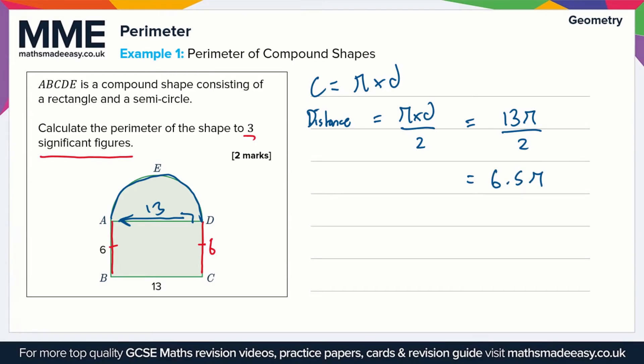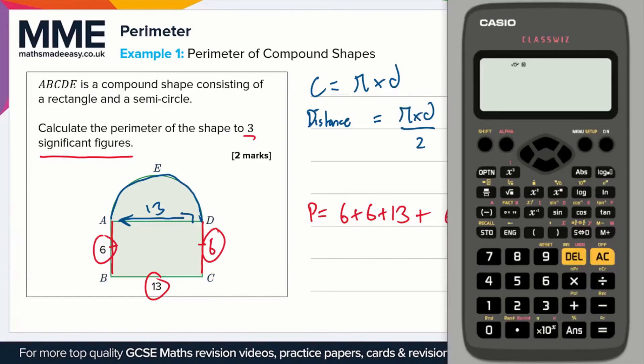So the total perimeter, P for short, is going to be equal to this 6 plus 6 plus 13 plus this 6.5 pi. Then all we're going to do is stick this in the calculator. So we've got 6 plus 6 plus 13 plus 6.5 times pi.